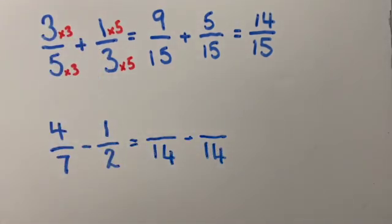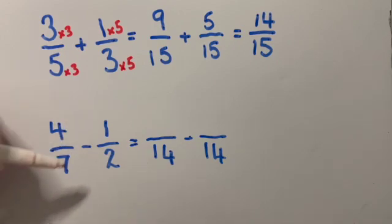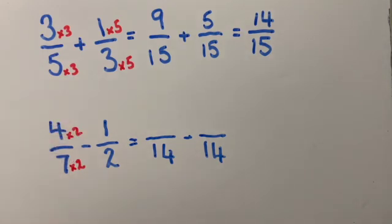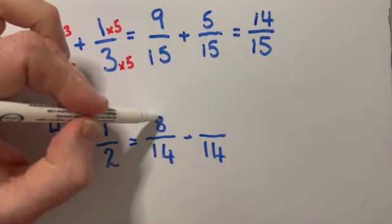Now I need to go back and check what I'm going to multiply the top by. So seven times two makes 14. So I'm going to do four times two on the top, which is eight.